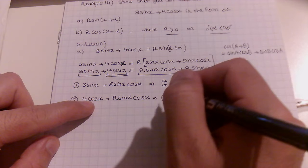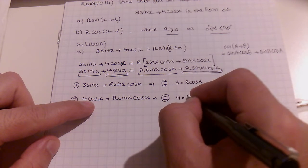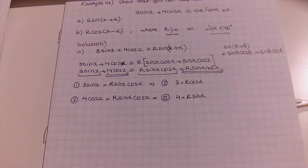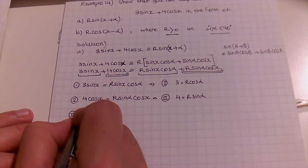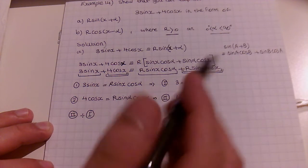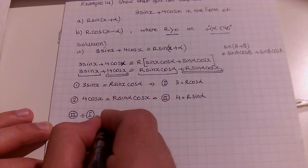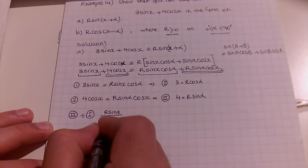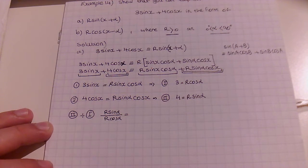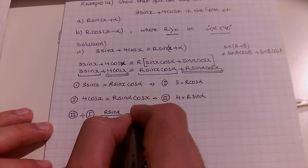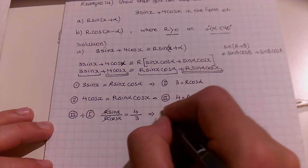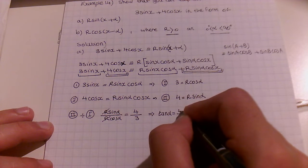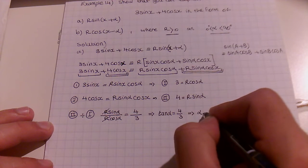Equation 2: matching the cos(x) terms, 4·cos(x) equals R·sin(α)·cos(x). Simplifying equation 1 by dividing both sides by sin(x), new equation 1 gives 3 equals R·cos(α). Simplifying equation 2 by dividing both sides by cos(x), new equation 2 gives 4 equals R·sin(α).